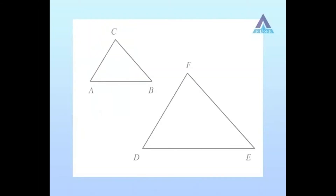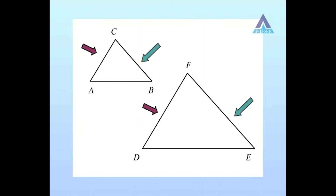In this theorem, we are comparing two triangles. The hypothesis is that the measures of two sides of one triangle are proportional to the measures of the corresponding sides of the other triangle. Moreover, the included angles of these two triangles are also equal. The conclusion of the theorem is that if these conditions are satisfied, then the two triangles being compared are similar.